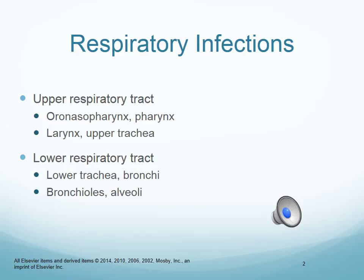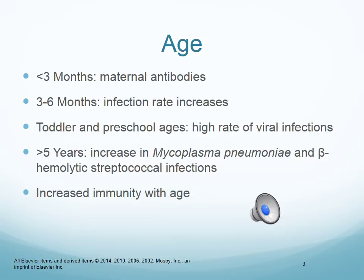When it comes to age and respiratory infections, age does matter. Infants under three months still have mom's antibodies — especially if they're breastfeeding — so they have a lower rate of respiratory infection. The rate increases between three and six months because mom's antibodies are wearing off. Between toddler and preschool age, we have a really high rate of viral infections for obvious reasons — these kids are getting socialized and going to daycares and schools and sharing everybody's germs. The most common infection for three-to-six-month-olds is RSV, the respiratory syncytial virus, and bronchiolitis caused by RSV.